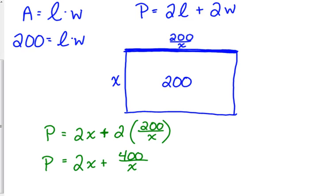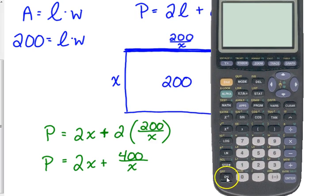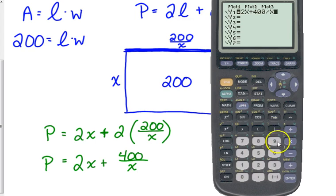Now, we want to find the minimum perimeter. So this is why we need our calculator. Because we don't know what the perimeter is, we need to find the minimum. So we're going to plug that into our Y equals 2X plus 400 over X. Notice, this is a rational equation because we have a variable in the denominator.